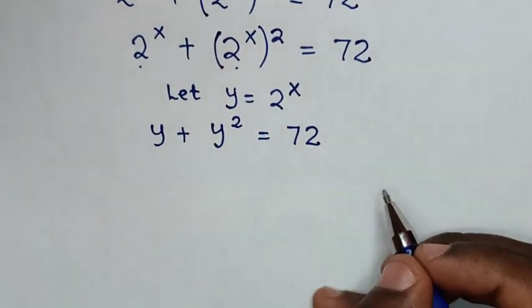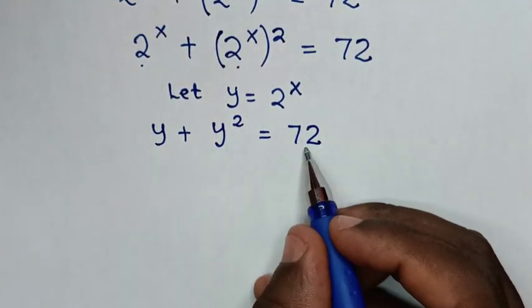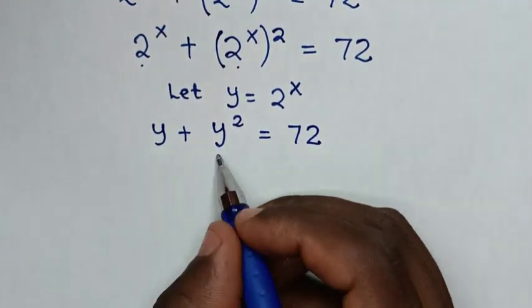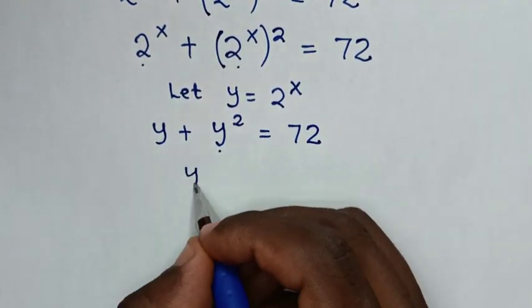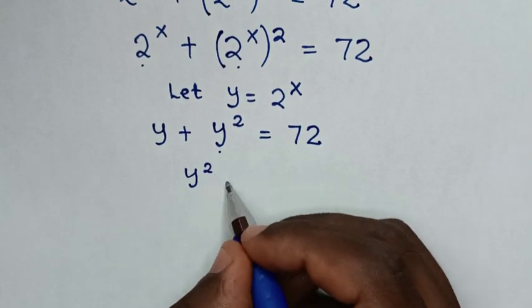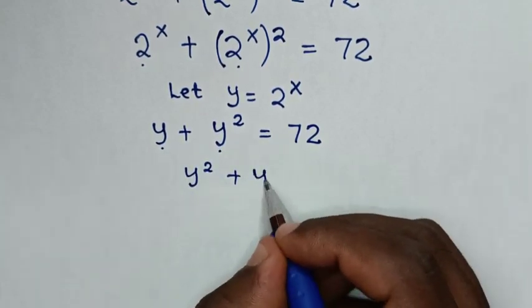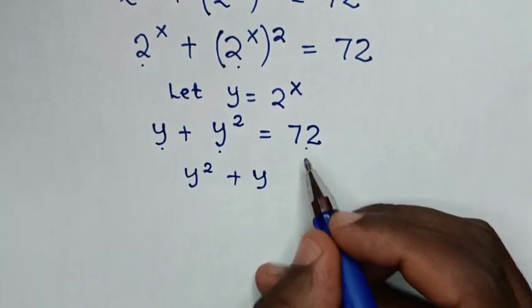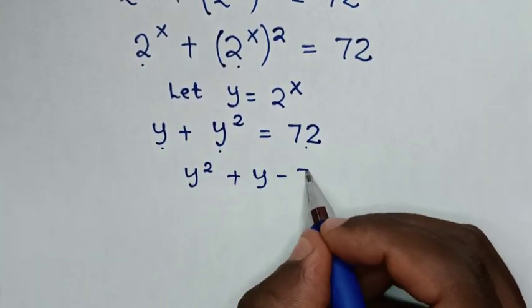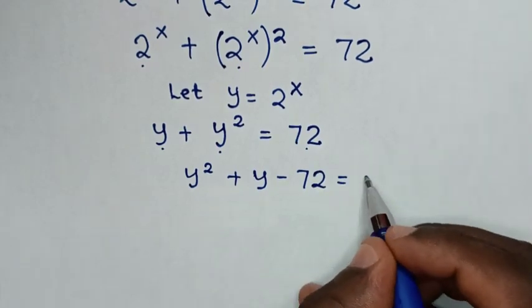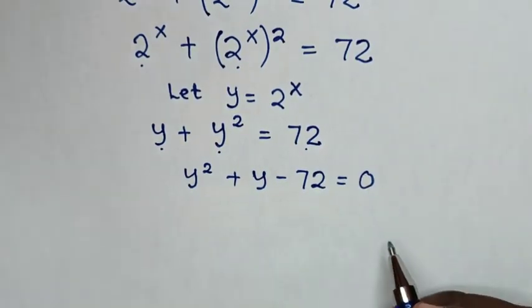Then in the next step, we take 72 to the left side. So it will be y squared plus y minus 72 is equal to 0.